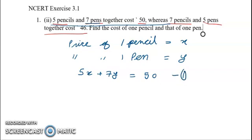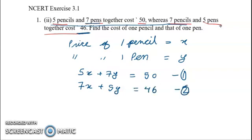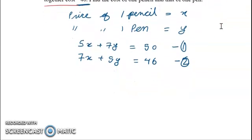5x plus 7y is equal to 50, so this is our equation number 1. For the second situation, we have 7 pencils and 5 pens and the total cost is 46 rupees, so 7x plus 5y is equal to 46. This is our equation number 2.